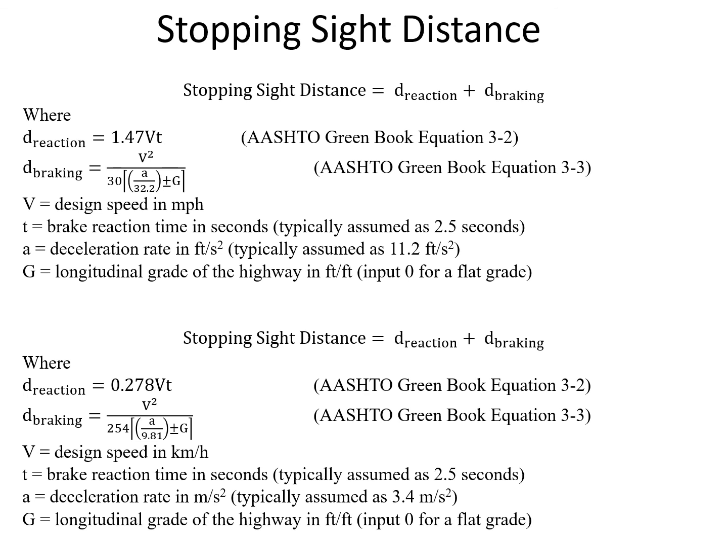Similarly for the metric units, the equations are provided. The reaction distance is 0.278 times the design speed times the reaction time. And the deceleration rate for the braking distance is 3.4 meters per second squared. So those are our equations for stopping sight distance.